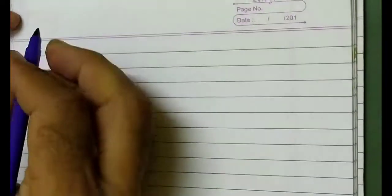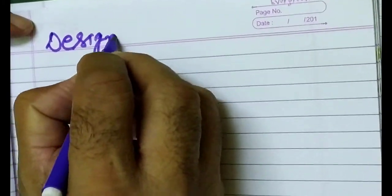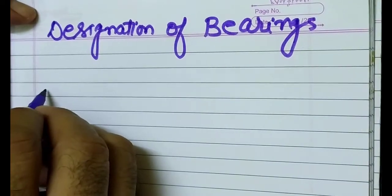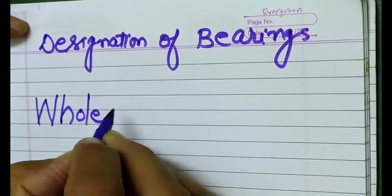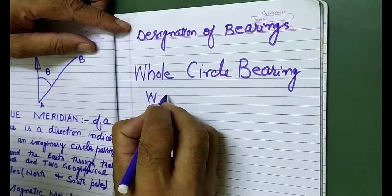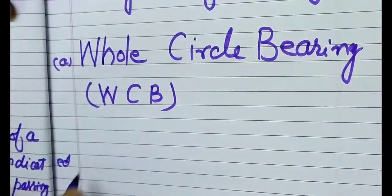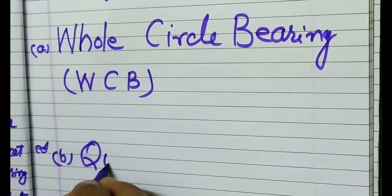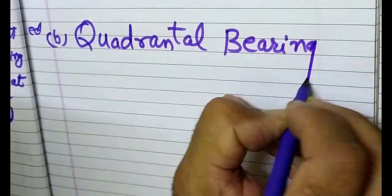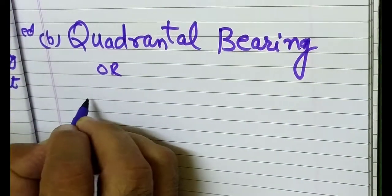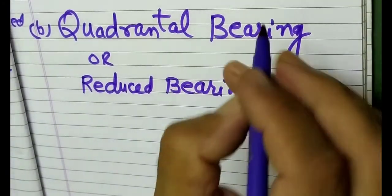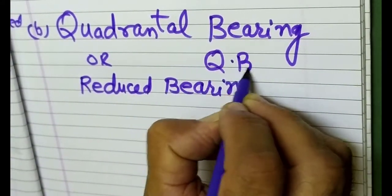Next, we are going to discuss the different types of bearings — designation of bearings. First is whole circle bearing, simply WCB. Then we have the quadrantal bearing, or we can say reduced bearing, recorded as QB or RB.